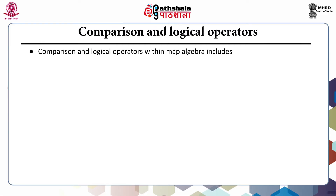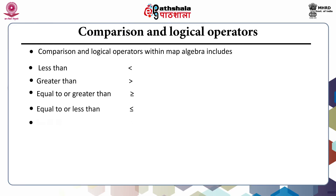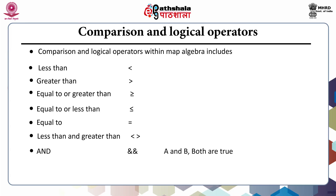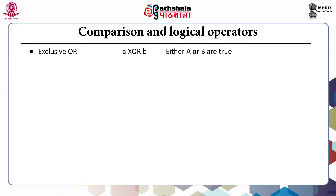The next is comparison and logical operators. These operators within map algebra include: less than, greater than, equal to or greater than, equal to or less than, equal to, less than and greater than. The logical operators include AND (both A and B are true), OR (A or B are true), XOR or exclusive OR (either A or B are true), and NOT (which inverts the values).